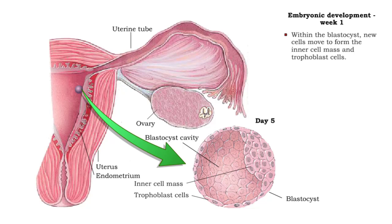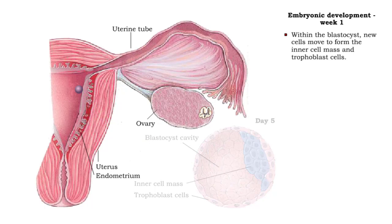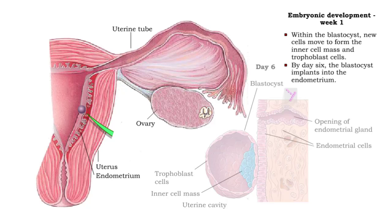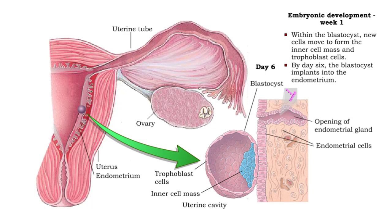The cells continue to rearrange, forming an area of more cell layers called the inner cell mass. The blastocyst's outer layer of cells is called the trophoblast. About six days after fertilization, the blastocyst attaches to the endometrium of the uterine wall.